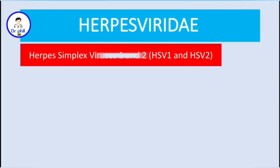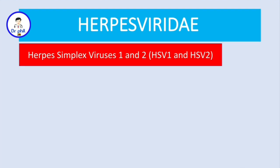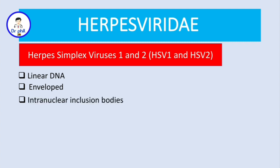Now let's talk about herpes simplex viruses 1 and 2. The herpes simplex viruses have a linear DNA and they have an envelope. This envelope is actually derived from the nuclear envelope. They replicate inside the nucleus of the host cell, so we also see intranuclear inclusion bodies, also known as Cowdry bodies or lipschutz bodies.